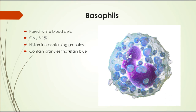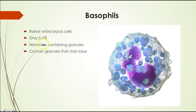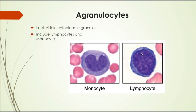Basophils are the rarest white blood cells, making up only 0.5 to 1% of all white blood cells. They contain histamine-containing granules that stain blue and are involved in inflammation and histamine responses — you take antihistamines to counteract this effect. Under the microscope, basophils appear as a dark blue cell with lots of dark granules.